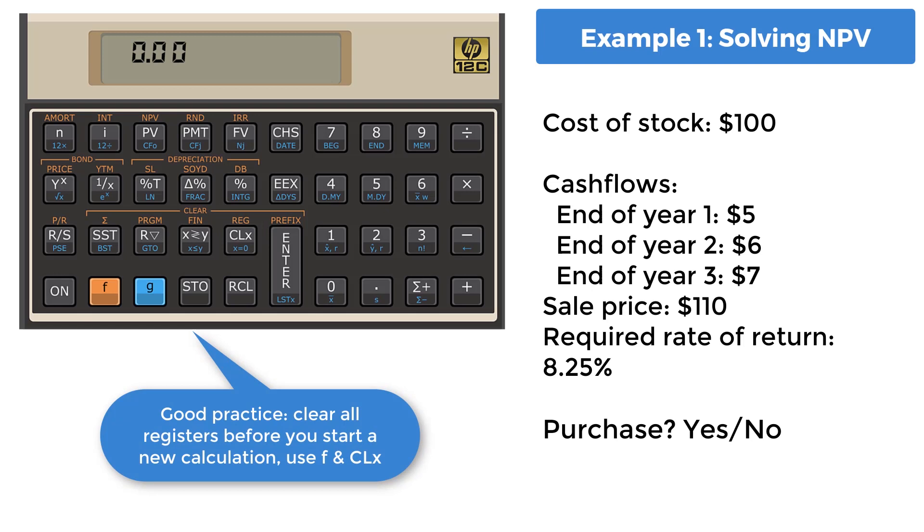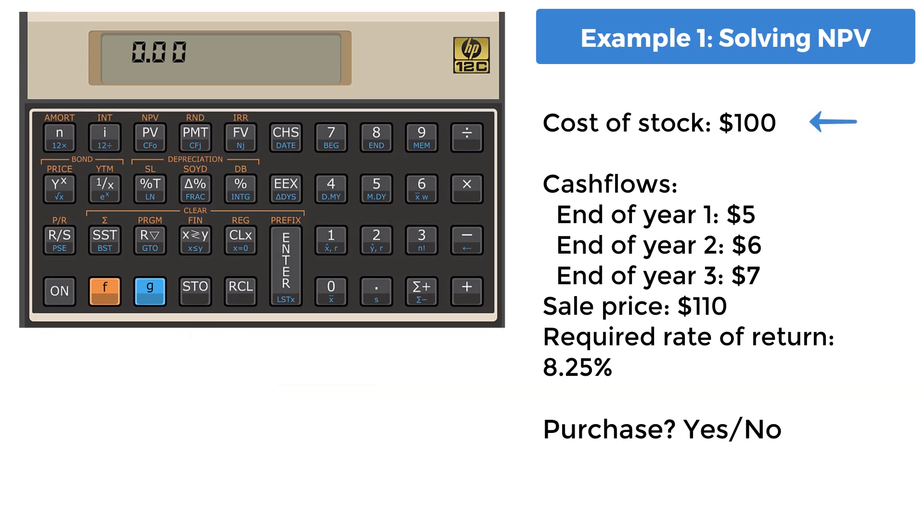Example 1, solving for NPV. You pay $100 for a stock, which provides a yearly cash flow at the end of each year as follows. $5 at the end of year 1, $6 at the end of year 2, and $7 at the end of year 3. At the end of year 3, you sell the stock for $110.